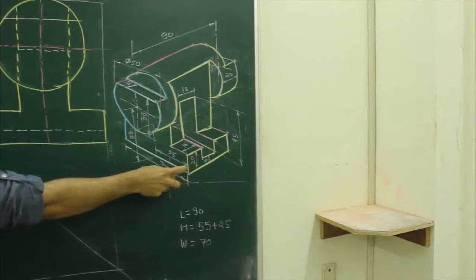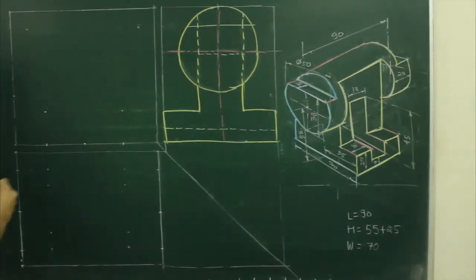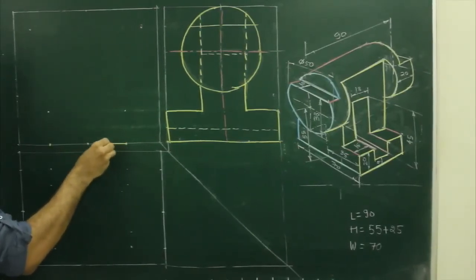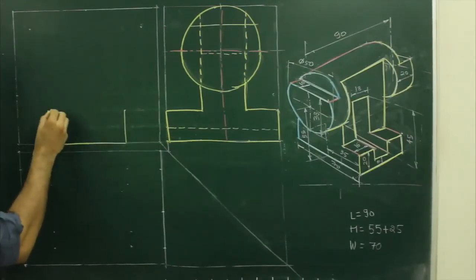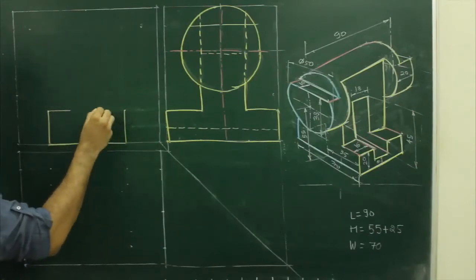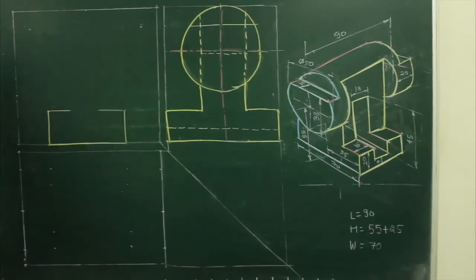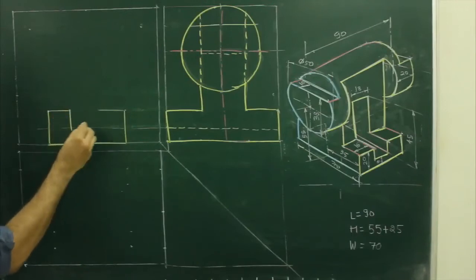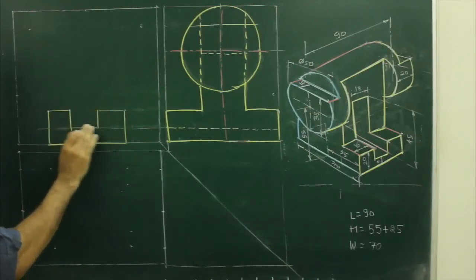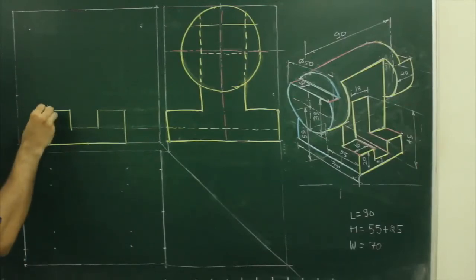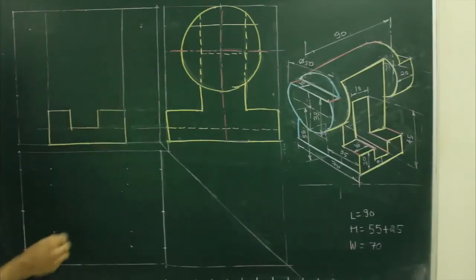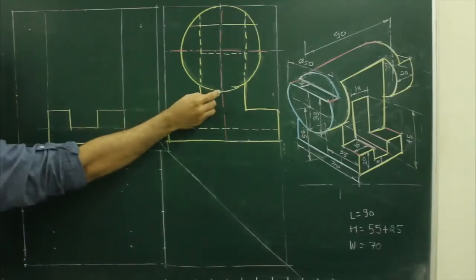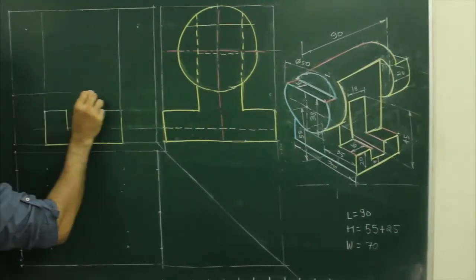First we will start with this: diameter is 50, so from the center we take 25 on each side. The height given is 20, then it goes inside by 16. You can project a line from here and extend this line straight up. Then we will project the circular part using projection lines from the side view.